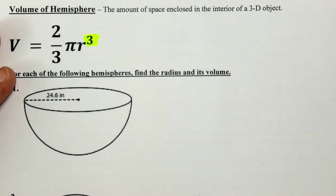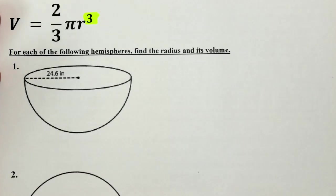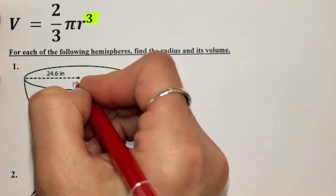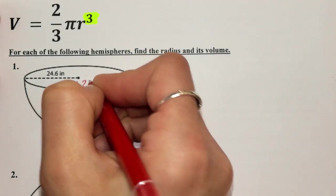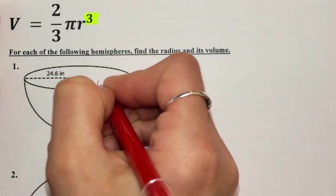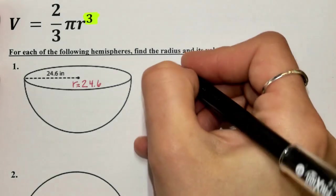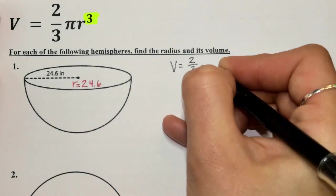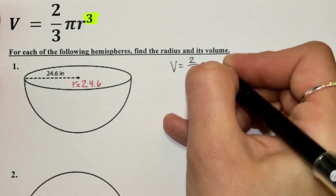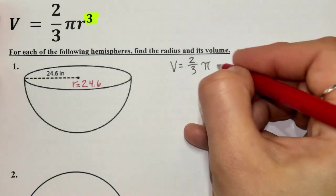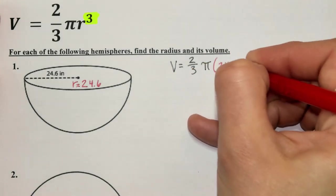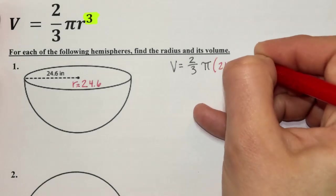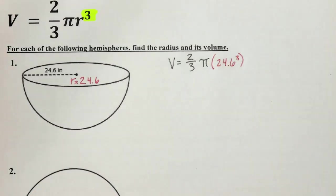For problem four, the radius is given as 24.6. The fraction changes but everything else stays the same. We now have: volume equals two-thirds pi times 24.6 cubed.